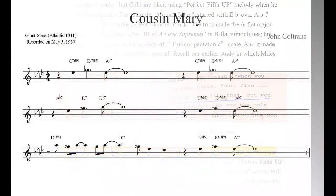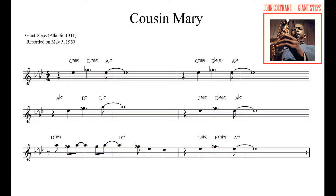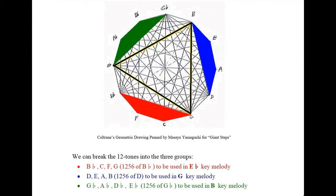For example, Cosmos A-flat major blues is written like this: 5, flat-7, 5. Usually people write 1, flat-3, 1. The melody is perfect fifth up. Coltrane uses the same kind of idea for the Giant Steps melody. So B-flat, C, F, G for the E-flat key melody. D, E, A, B in G key melody. G-flat, A-flat, D-flat, E-flat is going to be used in B key melody.